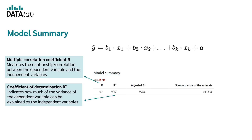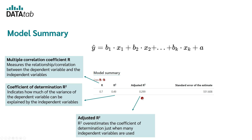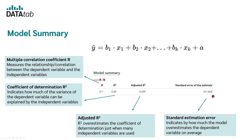R squared overestimates the coefficient of determination when too many independent variables are used. To fix this issue, the adjusted R squared is often calculated. The standard estimation error indicates by how much the model overestimates the dependent variable on average. For example, if your standard estimation error is 4 days, this means you miscalculate on average by 4 days with your prediction. Whether that is acceptable depends on whether the hospital management considers a 4-day average deviation sufficient for planning security.